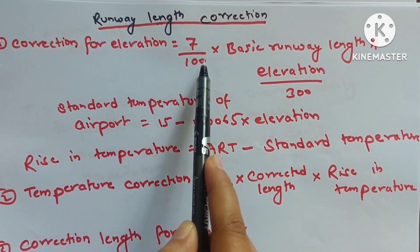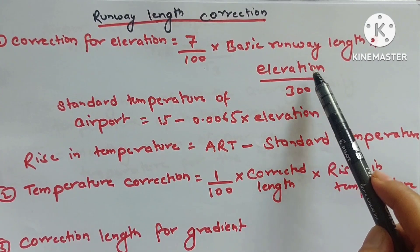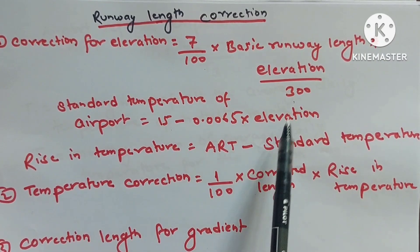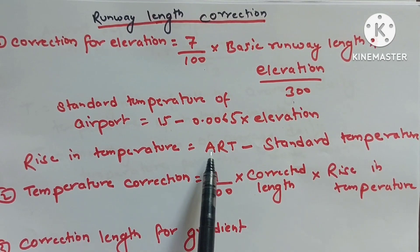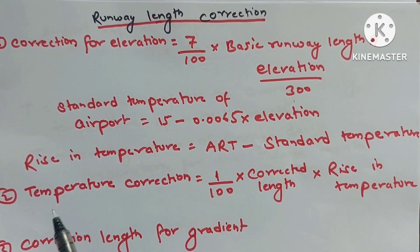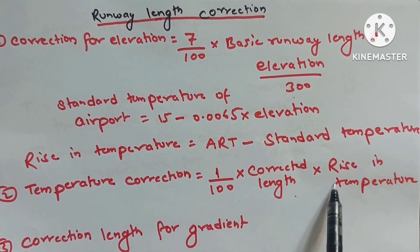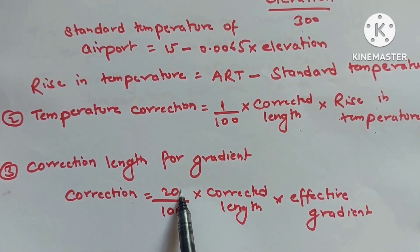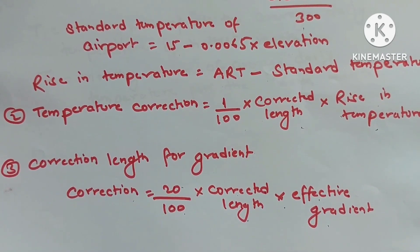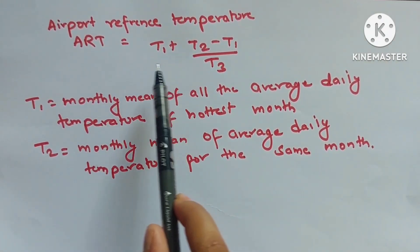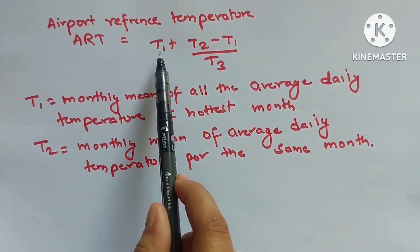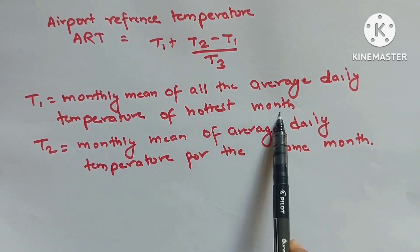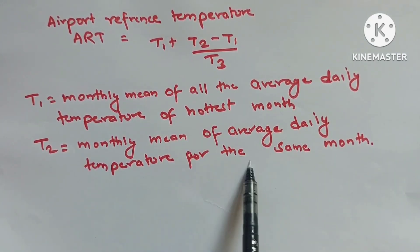Airport runway length corrections: Correction for elevation = (7/100) × basic runway length × elevation/300. Standard temperature at airport = 15 − 0.065 × elevation. Airport reference temperature (ART) = T1 + (T2 − T1)/3, where T1 is monthly mean of average daily temperatures of hottest month and T2 is monthly mean of maximum daily temperatures of same month. Temperature correction = (1/100) × corrected length × rise in temperature. Gradient correction = (20/100) × corrected length × effective gradient.